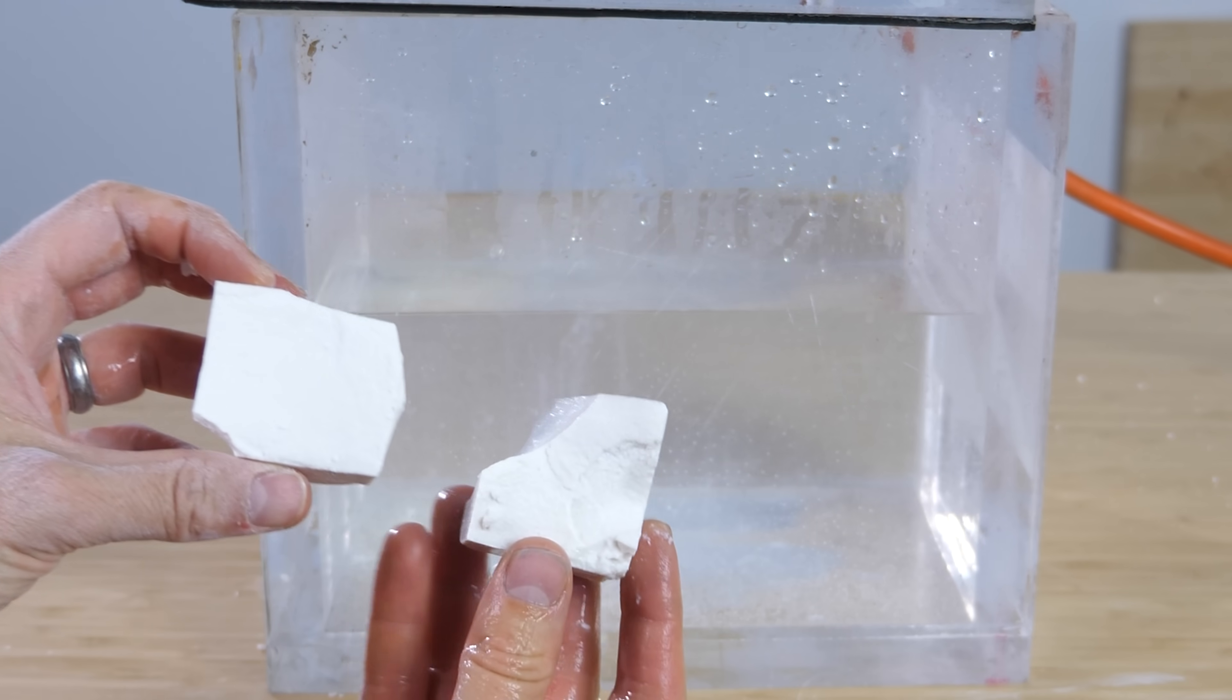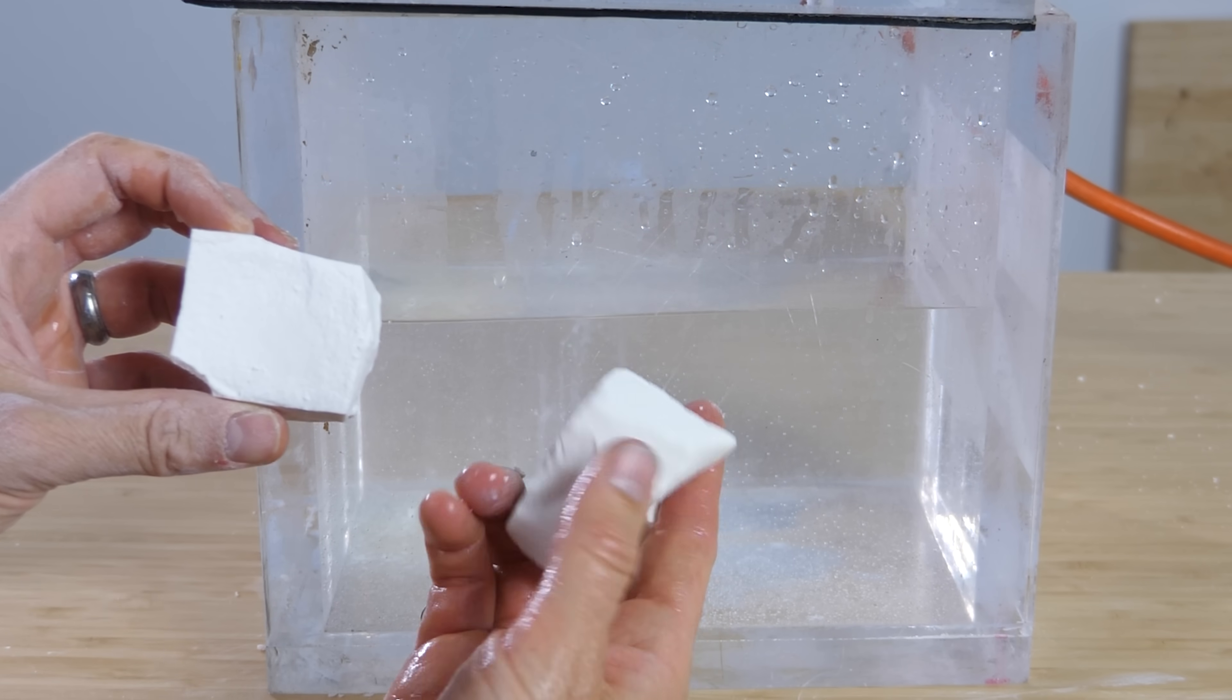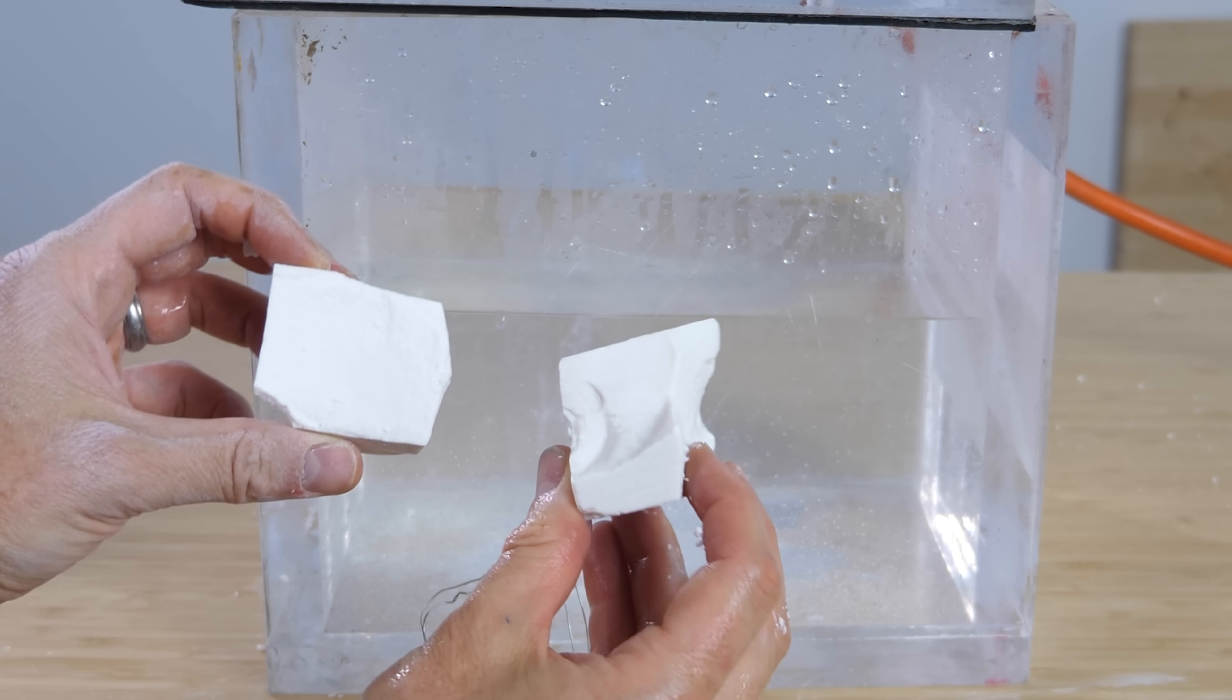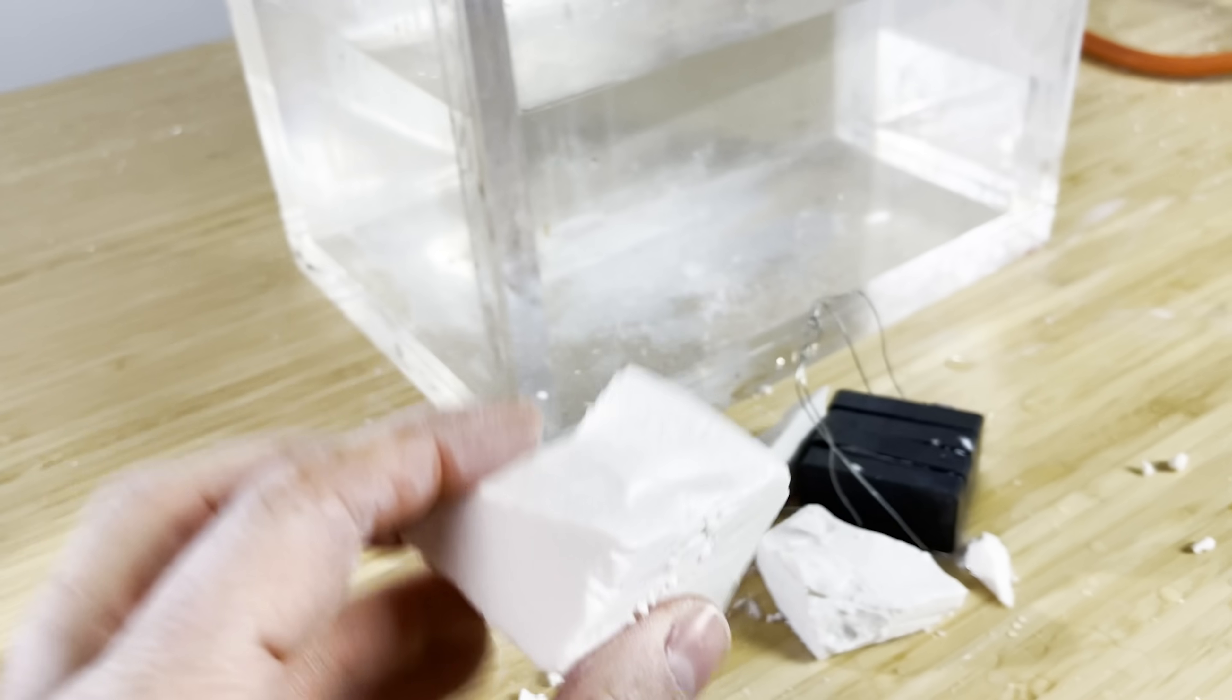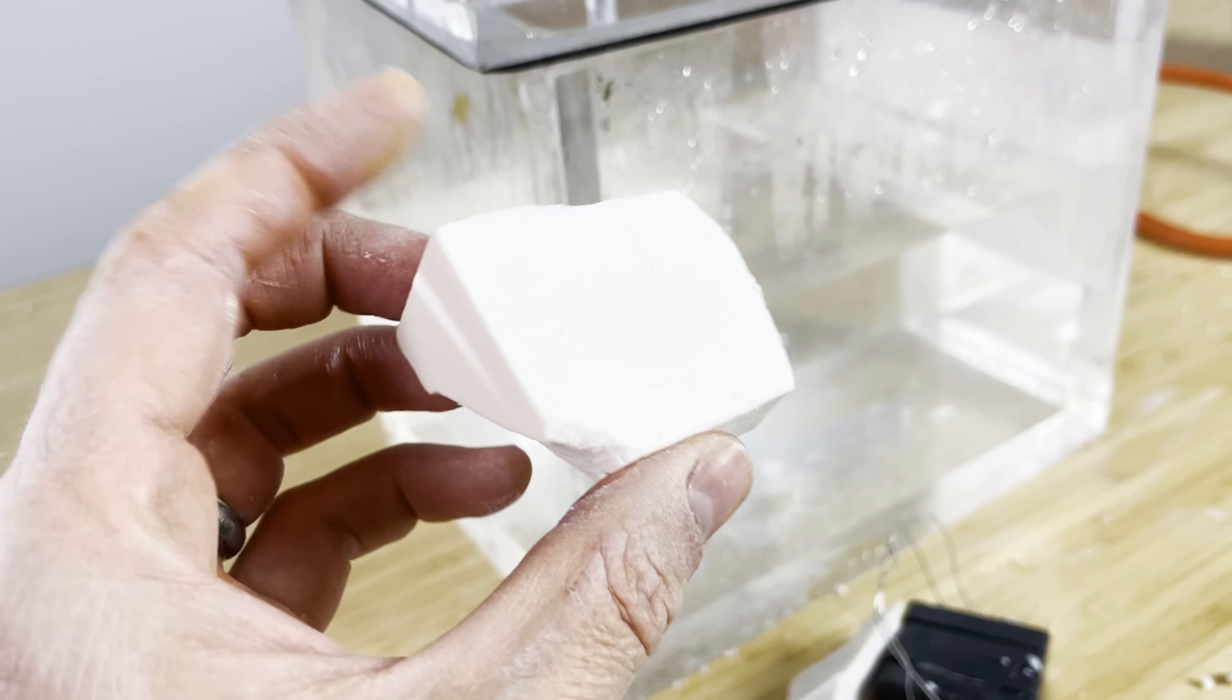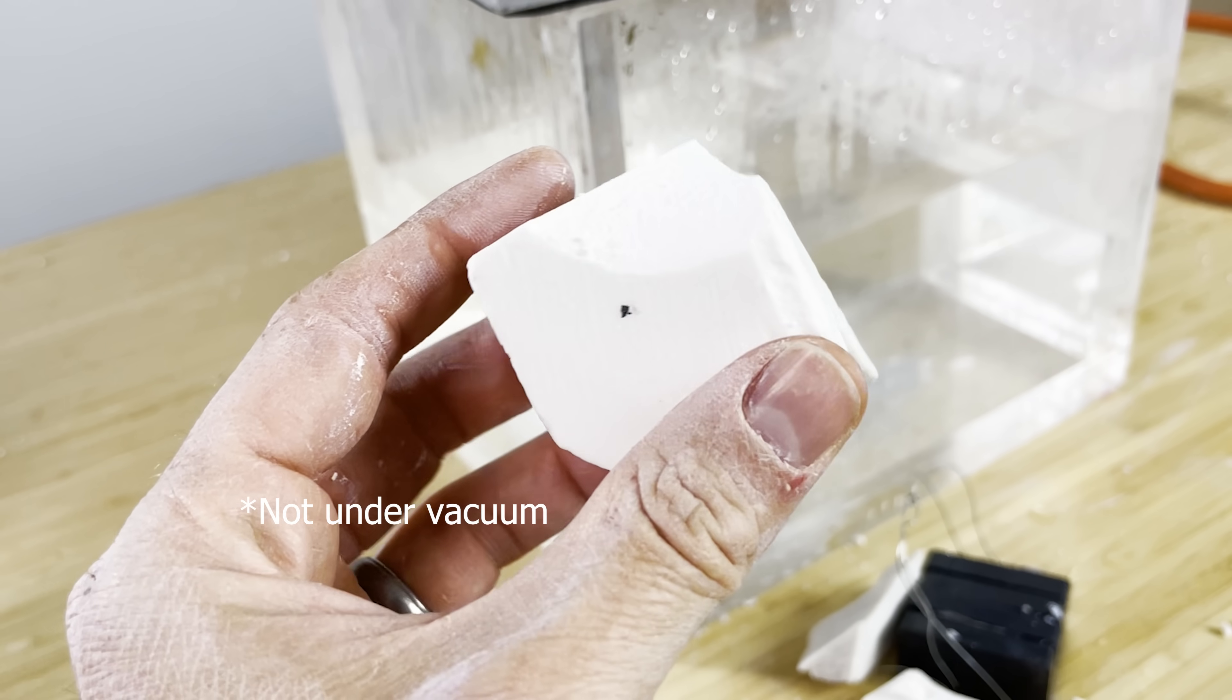You can see the difference between the two. This is the one we vacuumed. You can see it's visibly wet and shiny, so it's completely saturated, whereas the one we left in there for five minutes still looks pretty dry.